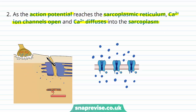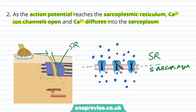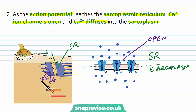So we've got an action potential coming along, going down the T-tubules and activating these ion channels, which are found in the membrane of the sarcoplasmic reticulum. If we consider this would be the sarcoplasmic reticulum lumen and this would be the sarcoplasm, then once these channels have been opened, the calcium can simply diffuse from where they're stored, where there's a high concentration, out to the sarcoplasm where there are very few of them. That's the second step.